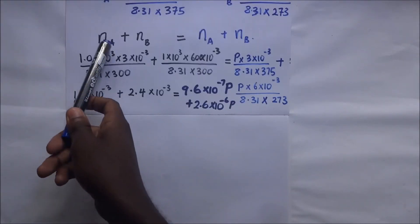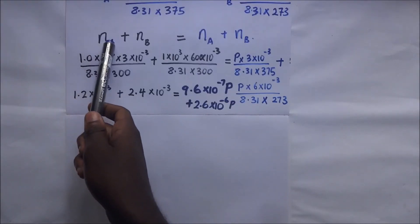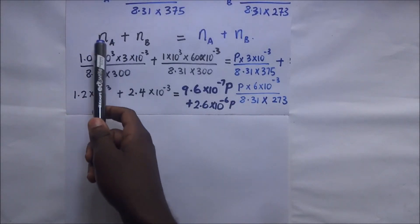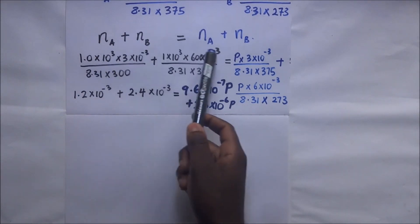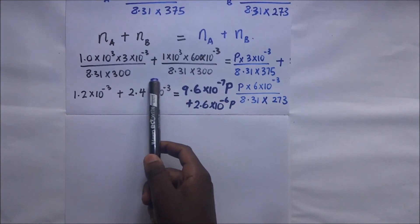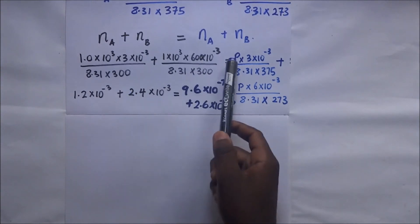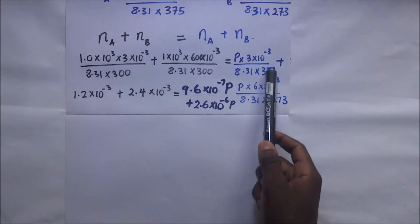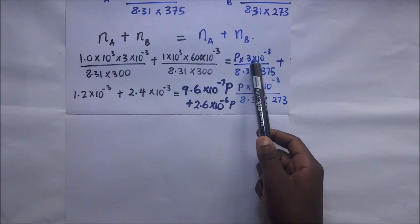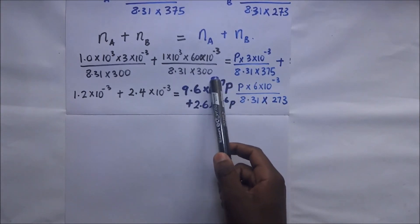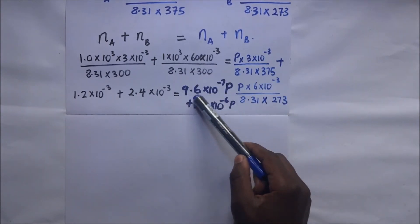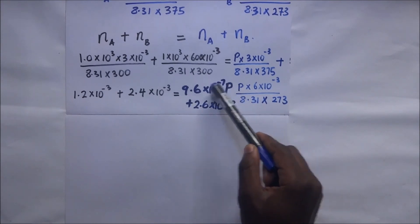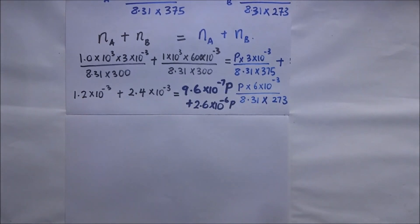Substituting all expressions — the initial moles in A plus the initial moles in B equals the new moles in A plus the new moles in B — and working through the algebra, we arrive at the value of the new pressure P.